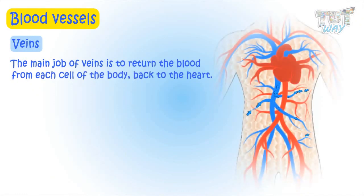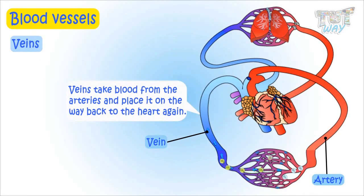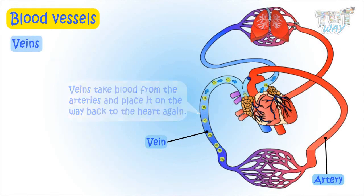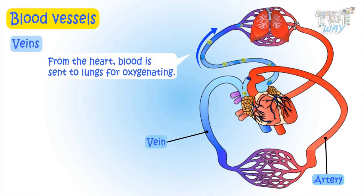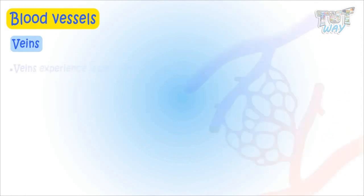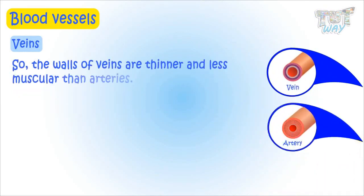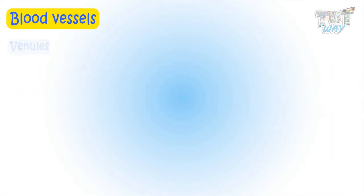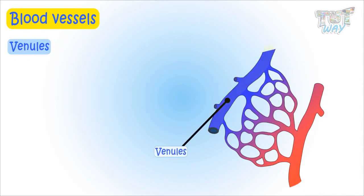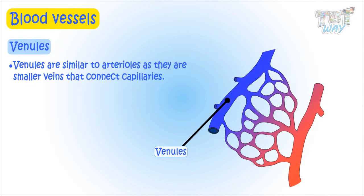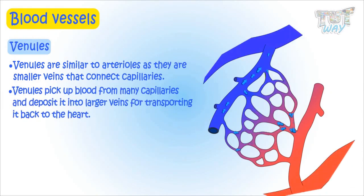The main job of veins is to return the blood from each cell of the body back to the heart. Veins carry blood back to the heart, from where the blood is sent to the lungs for oxygenating. Veins experience lesser pressure compared to arteries, which receive blood directly from the heart, so the walls of the veins are thinner than those of arteries. Venules are smaller veins that connect capillaries; venules pick up blood from many capillaries and deposit it into larger veins for transporting it back to the heart.